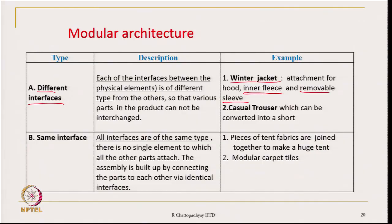Such designs are basically a kind of modular architecture. The interfaces are such that in one particular interface only one item can be attached — at the interface of the hood, only the hood can be attached; at the sleeve interface, only the sleeve. The other type is same-interface architecture, where the interfaces are of the same type and you can attach any pieces. The assembly is built up by connecting parts to each other by identical interfaces. An example for textiles is modular carpet tiles and huge tent fabrics.